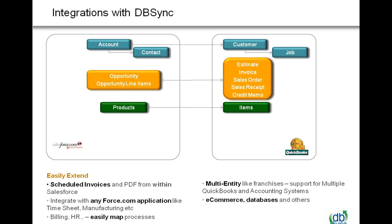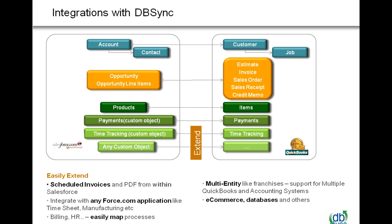Visibility is increased. You can see products that get pushed across into items, and payments — which are custom objects in Salesforce — get sent across into QuickBooks as payments. You can map any type of process, whether it be a billing process, an HR process, or whatever in your organization, and map it to any other third-party system like QuickBooks or databases. Time tracking and any custom object can be extended over to QuickBooks.